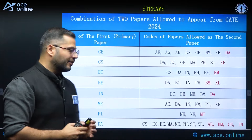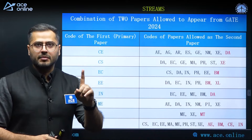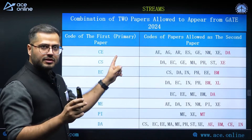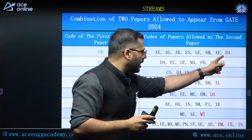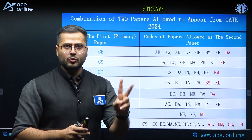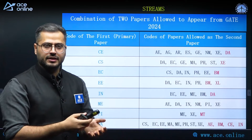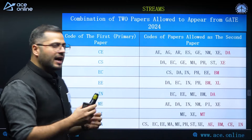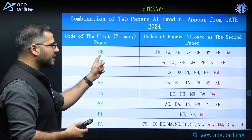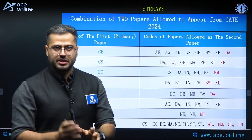This is the combination list for two papers. For example, a civil engineering student can give civil engineering as the primary examination, and can choose one other stream as a second paper. Now they have released a new combination list where they have added some extra streams to various streams. For civil engineering, they have added a secondary paper of DA — Data Science and Artificial Intelligence.